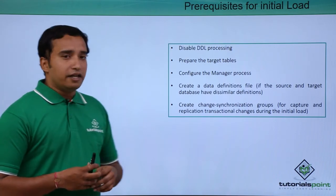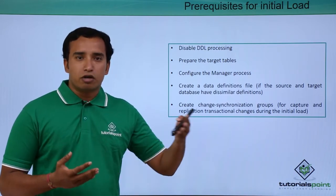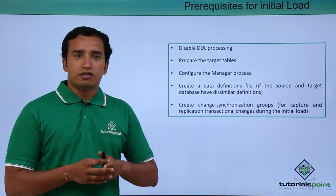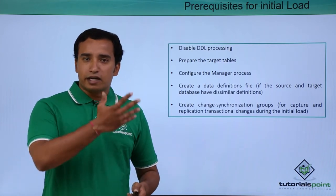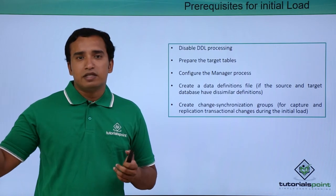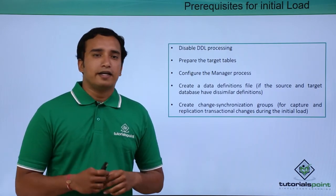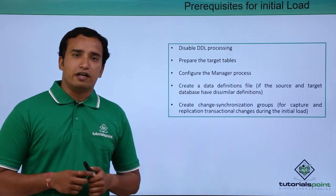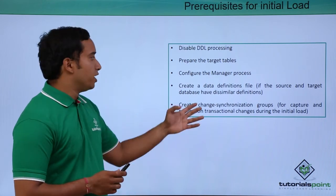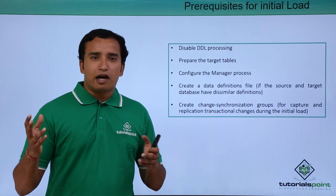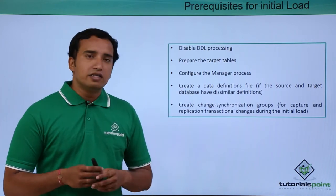Now, what are the prerequisites? The basic prerequisites for handling initial load: first, disable DDL — that means you need to disable Data Definition Language operations like creating new objects, creation of tables, or altering tables in the source database. Second, prepare the target tables — whatever tables exist in your source database, you need to create those same tables in the target database. Third, configure the manager processes on your source and target database. Fourth, create the data definition file — if your source and target databases are heterogeneous or of different RDBMS vendors, or if the source and target table structures are different, then you need to create this data definition file.